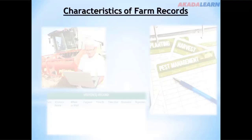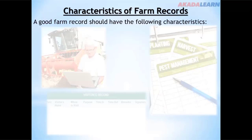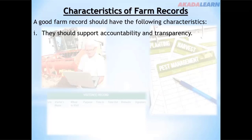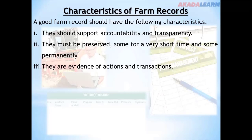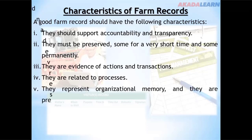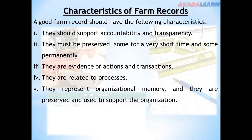Characteristics of farm records: a good farm record should have the following characteristics. They should support accountability and transparency. They must be preserved — some for a very short time and some permanently. They are evidence of actions and transactions, they are related to processes, and they represent organizational memory, preserved and used to support the organization.